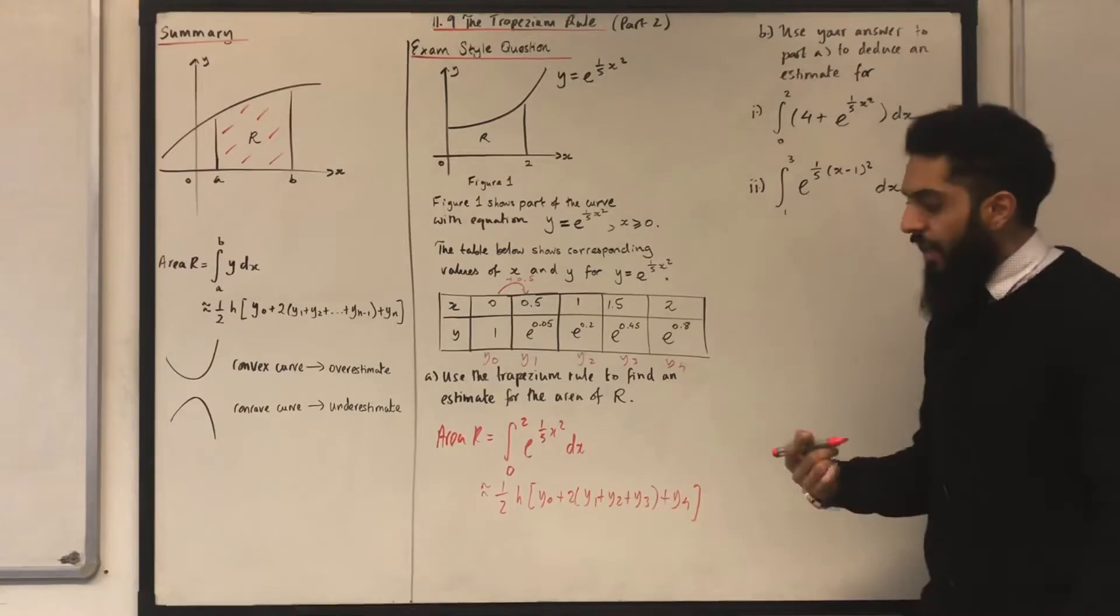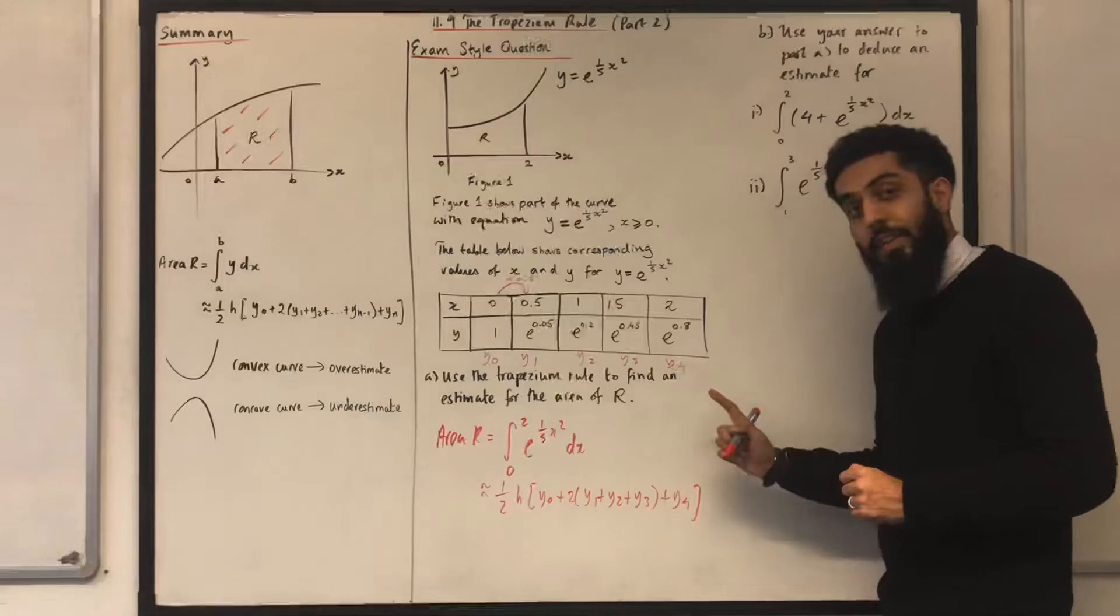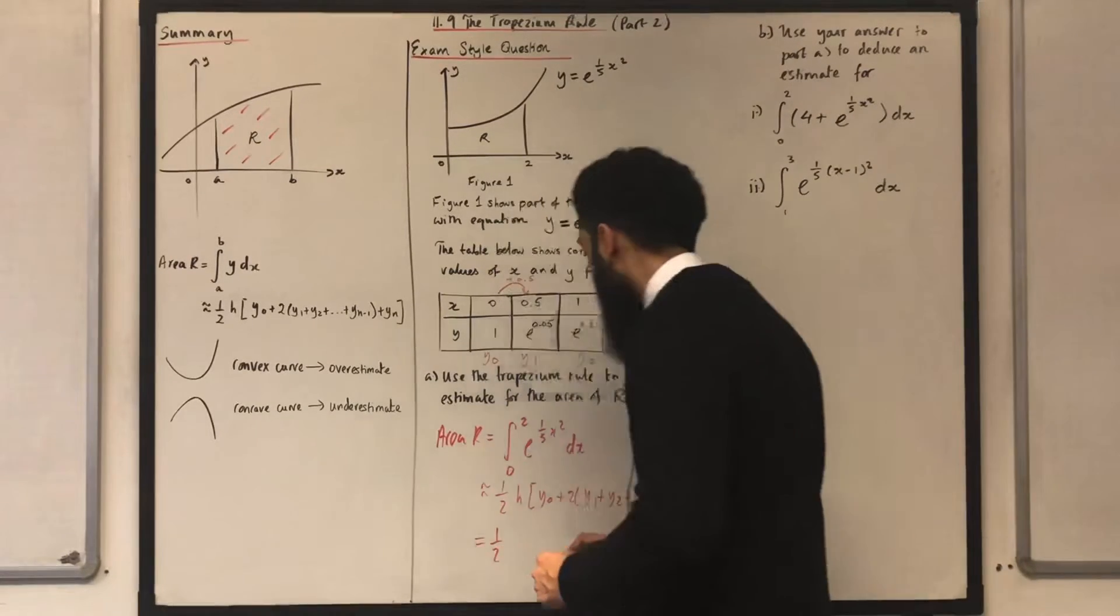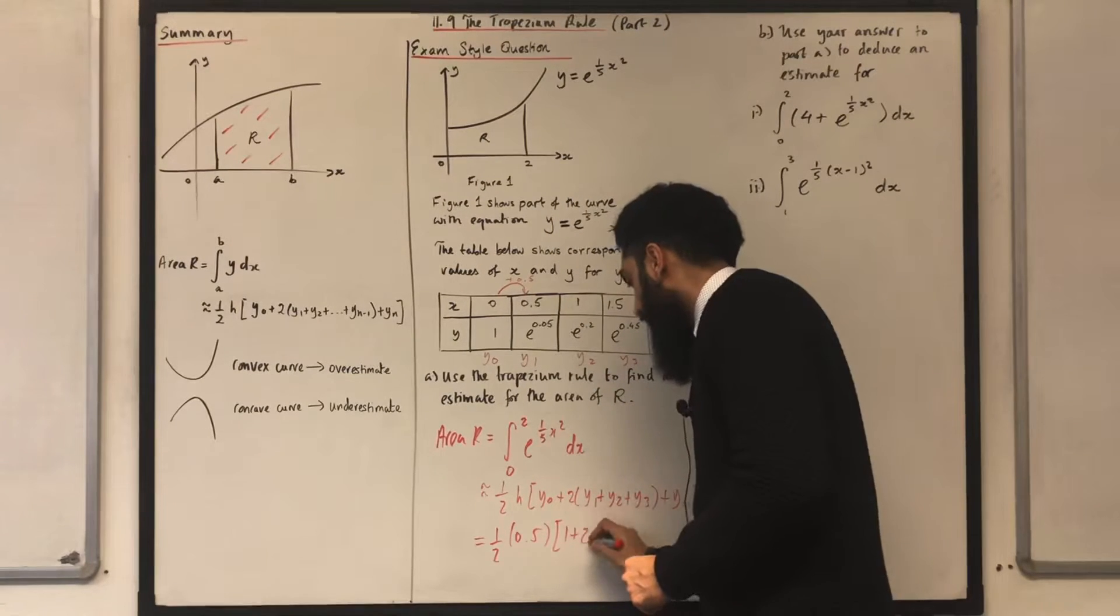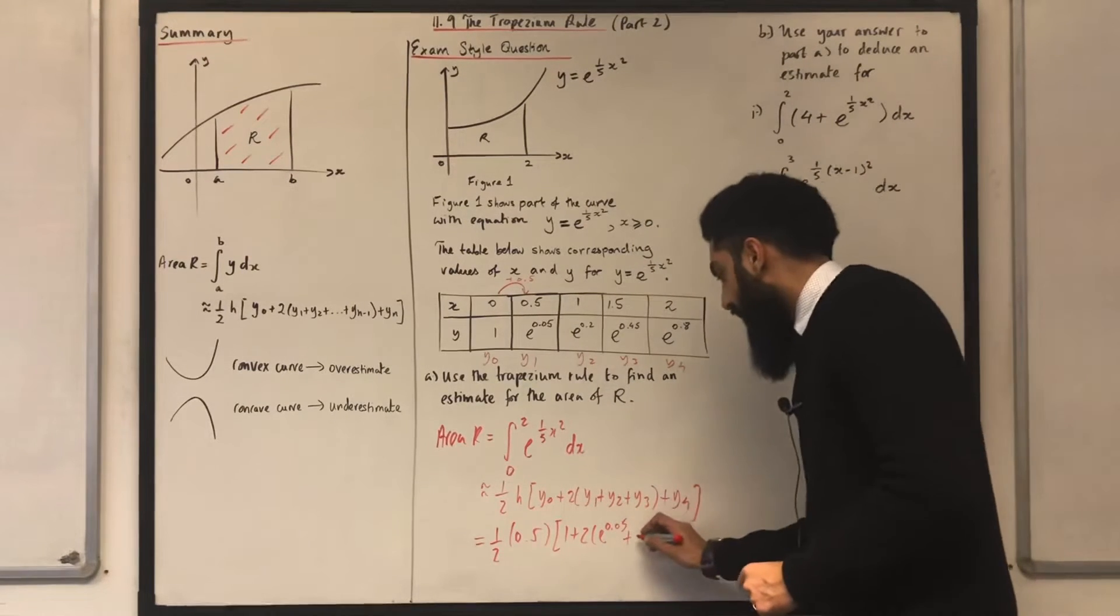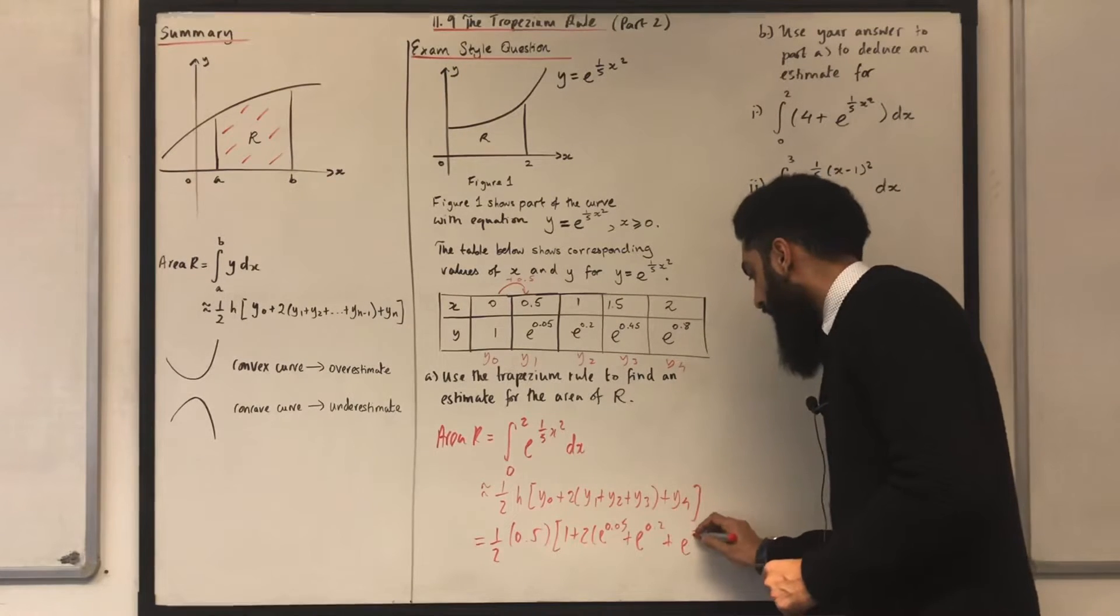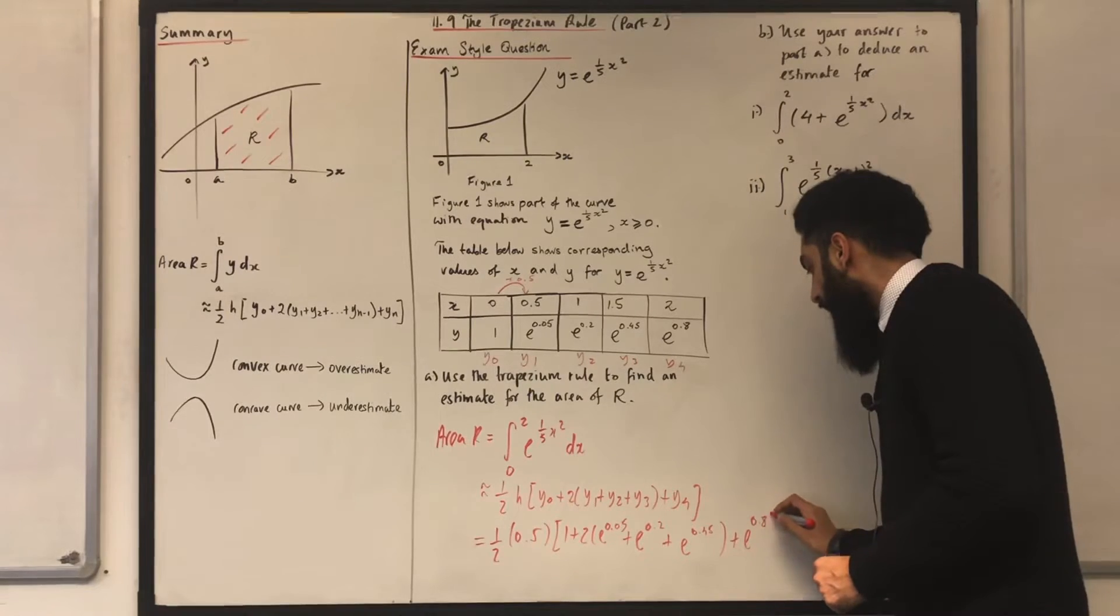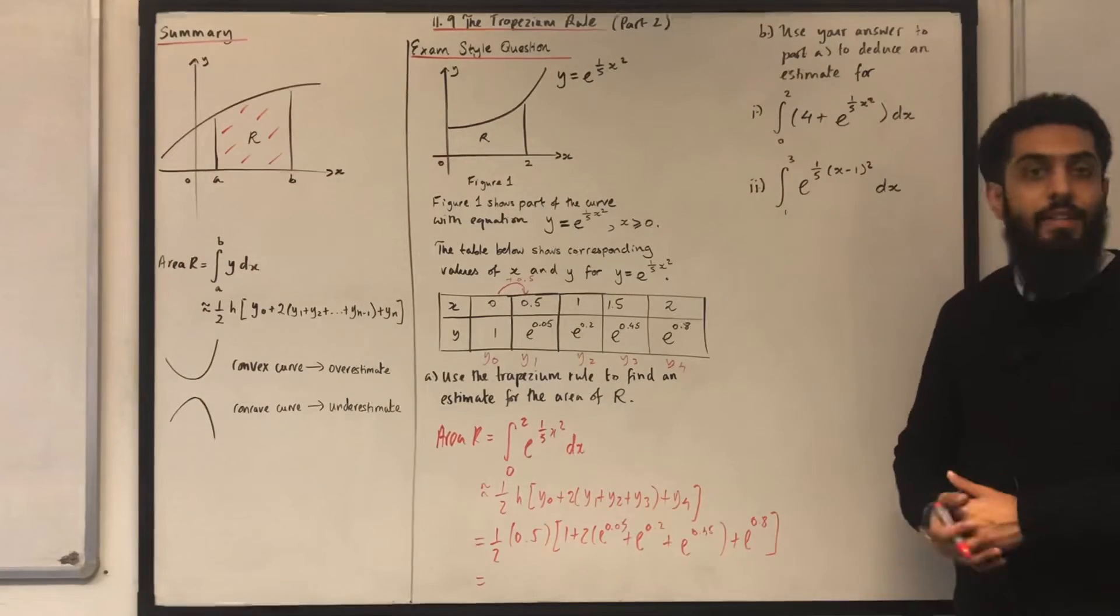Now, I can input my h, y0, y1, y2, y3, and y4 into the Trapezian Rule. So if I do this, I get a half in bracket 0.5 square bracket 1 plus 2 in bracket e to the power 0.05 plus e to the power 0.2 plus e to the power 0.45 close bracket plus e to the power 0.8 close square bracket. If I input this into my calculator, I get 2.73.